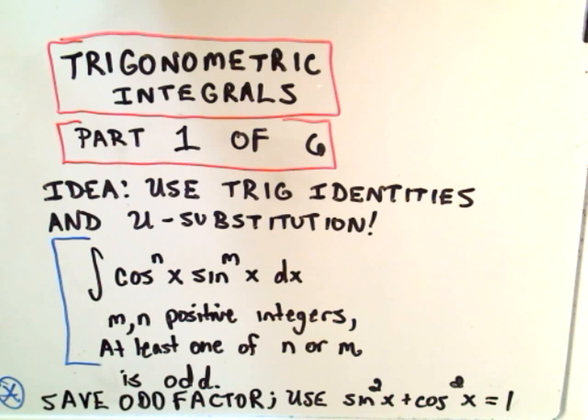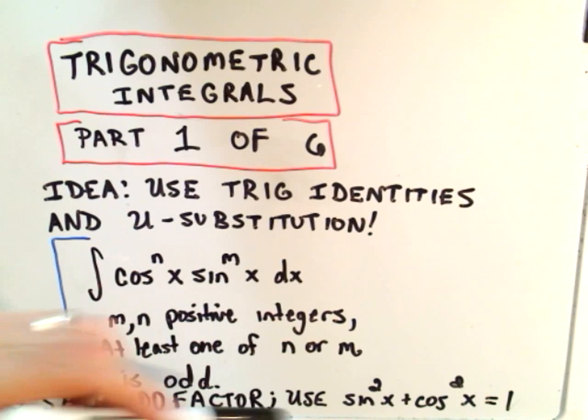It's just kind of memorizing some recipes. So the first one we're going to look at is when you have cosine to a power times sine to a power. We want the powers to be positive whole numbers, and we want at least one of the powers to be odd. The idea is, whoever's odd, we're going to save one of those and then use this trig identity.